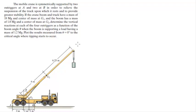Alright guys, let's take a look at this time-consuming problem, but if you stay focused it's very easy to do. The mobile crane is thematically supported by two out-triggers at A and two out-triggers at B. Remember, there's two on each side — in the diagram you only see one because you're looking at it from the side, so there's two on each side — that's important.